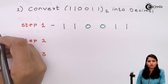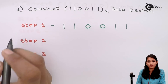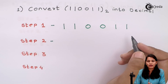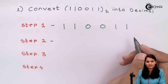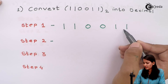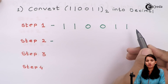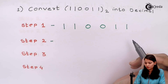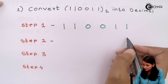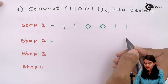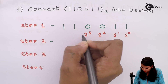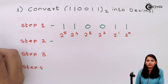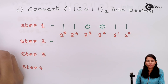The next step is to write the binary weightage. As mentioned, always start from the right hand side — the right-most position always gets the least power of 2, that is 2 raise to 0. Let's write down the weightage of the given binary number.